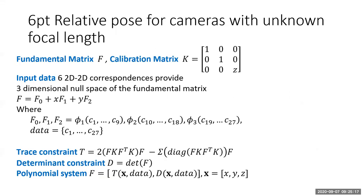Let's take the six-point relative pose problem for pinhole cameras with unknown focal length as a simple example. The scene geometry puts a constraint on the fundamental matrix, a well-known algebraic quantity in multiple-view geometry. With six 2D-to-2D point correspondences, we get a three-dimensional null space of the fundamental matrix. We can write the fundamental matrix as F = x·F0 + y·F1 + z·F2, where F0, F1, and F2 depend only on the six input data measurements.